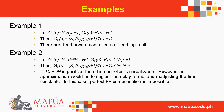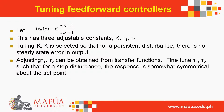For example number two: let Gp(s) = Kp·e^(−dp·s) / (τp·s + 1) and GL(s) = KL·e^(−dL·s) / (τL·s + 1). Then GF(s) = (KL/Kp) · (τp·s + 1)/(τL·s + 1) · e^((−dL + dp)·s). If (−dL + dp) is positive, this controller is unrealizable. An approximation is to neglect the delay terms and readjust the time constants; in this case perfect feedforward compensation is impossible.